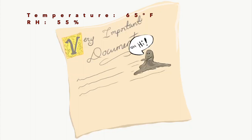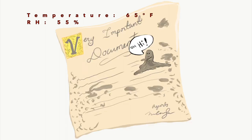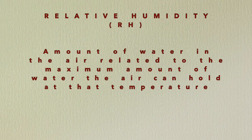Temperature should be reduced to 65 degrees Fahrenheit or below and air circulation maximized. Relative humidity, or RH, should be monitored and ideally reduced to 55%. Relative humidity is the amount of water in the air related to the maximum amount of water the air can hold at that temperature.